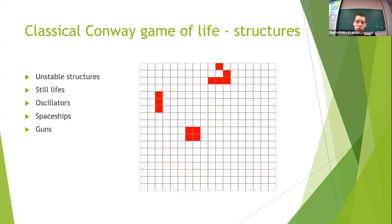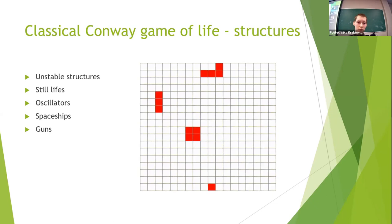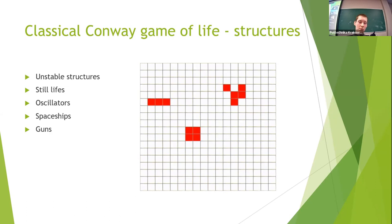Oscillators are structures in which the cells that compose them change in the next cycles. What differentiates them from unstable structures is that they return to the original shape after a certain number of cycles — oscillators change periodically. The simplest structure is a blinker, which is made up of three cells arranged in a row, and it can be seen on the left of the board.